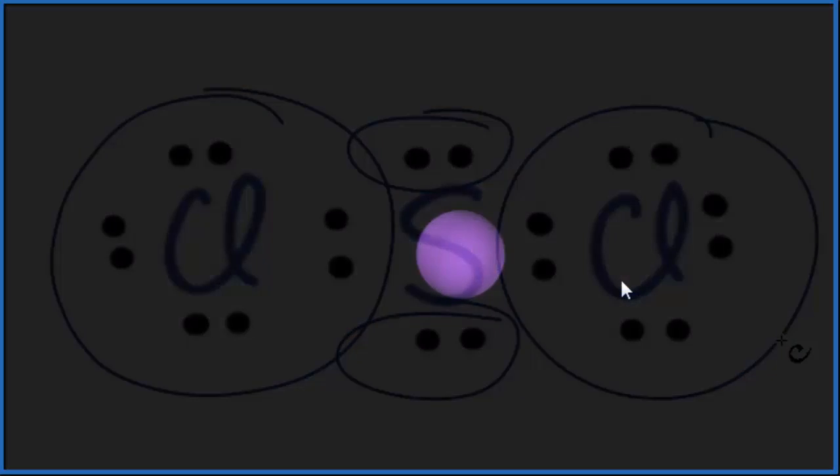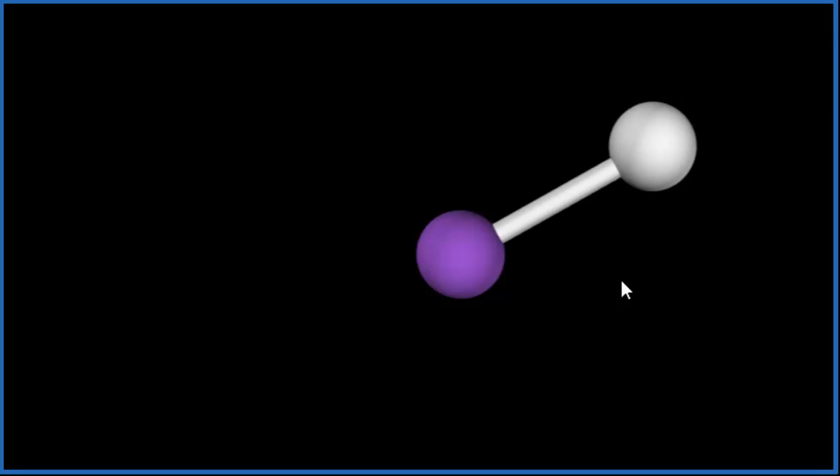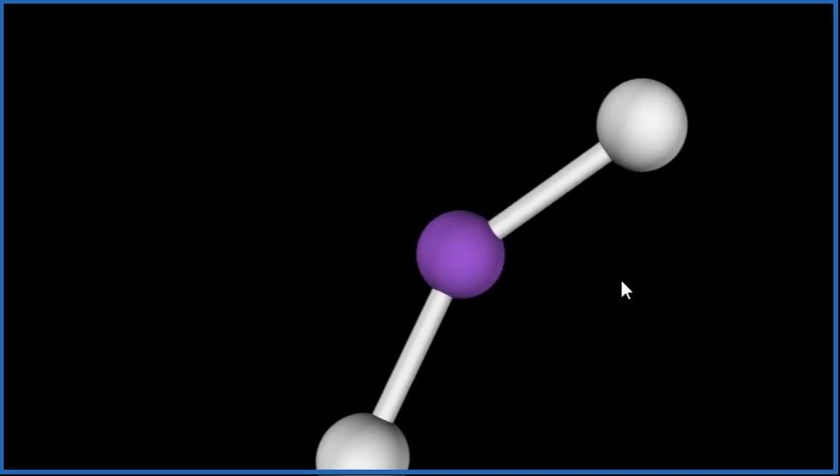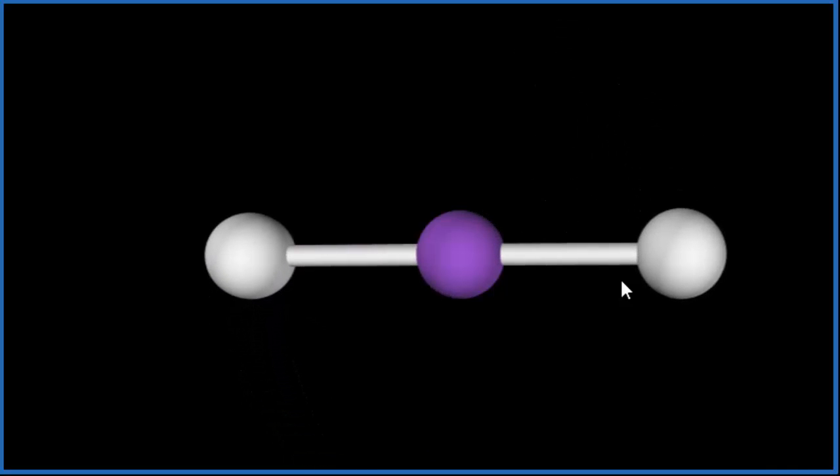Let's visualize that. So you can imagine the purple, that's the central sulfur atom. We're going to add two chlorines, one, and then the second one. They push away as far away as they can from each other. So this would be a linear molecular geometry, but those two lone pairs, we need to take those into account.